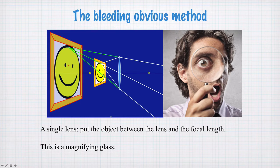Well, the bleeding obvious method is to put a lens between your eye and the object you're looking at. So here's the object you want to look at, here's the lens, and your eye is somewhere over here. And as long as the object is between the focal length of the lens and the lens itself, it'll make something look bigger. And this is a magnifying glass.